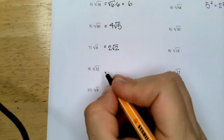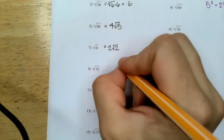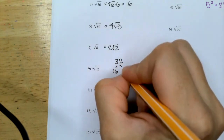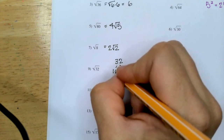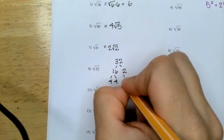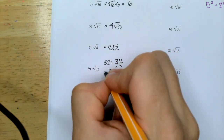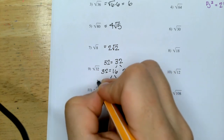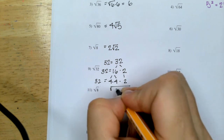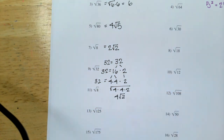For the square root of 32: 32 divided by 16 is 2, so 32 is 16 times 2. And 16 is 4 times 4. So 32 equals 4 times 4 times 2, and the square root of 4 times 4 times 2 gives 4 times the square root of 2.